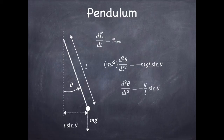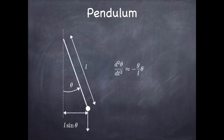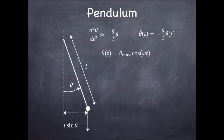That equation of motion has a sine of theta in it, so it's hard to solve. We often make the small angle approximation in which sinθ becomes approximately equal to θ, and then we proceed to solve that in the small angle approximation. We assume solutions of the form cosine(ωt) times some amplitude. I want to point out that θ double-dot is a physicist's notation for the second derivative of theta with respect to time.